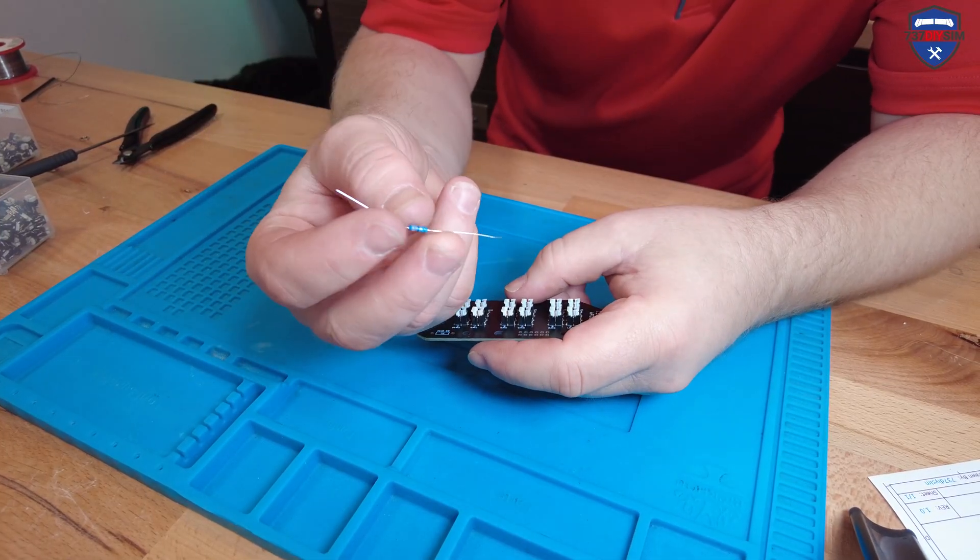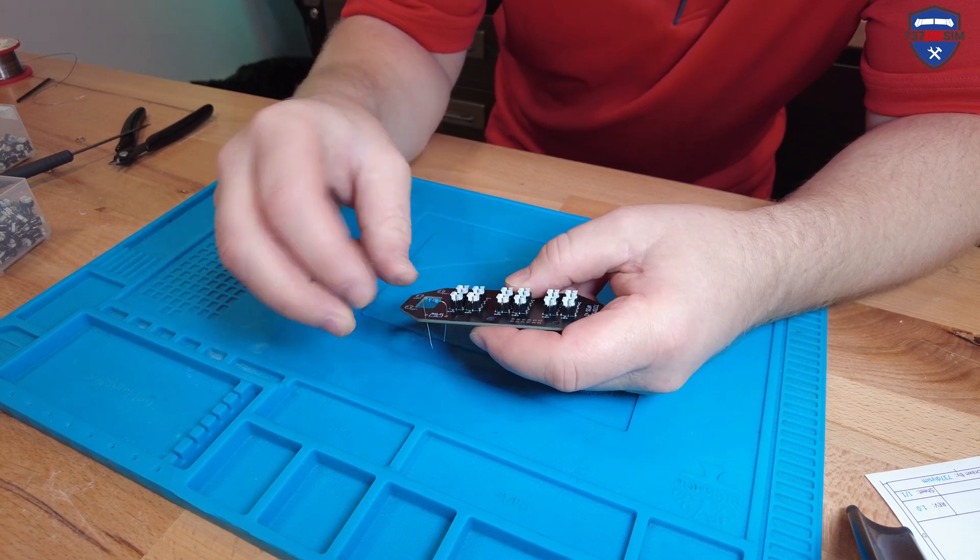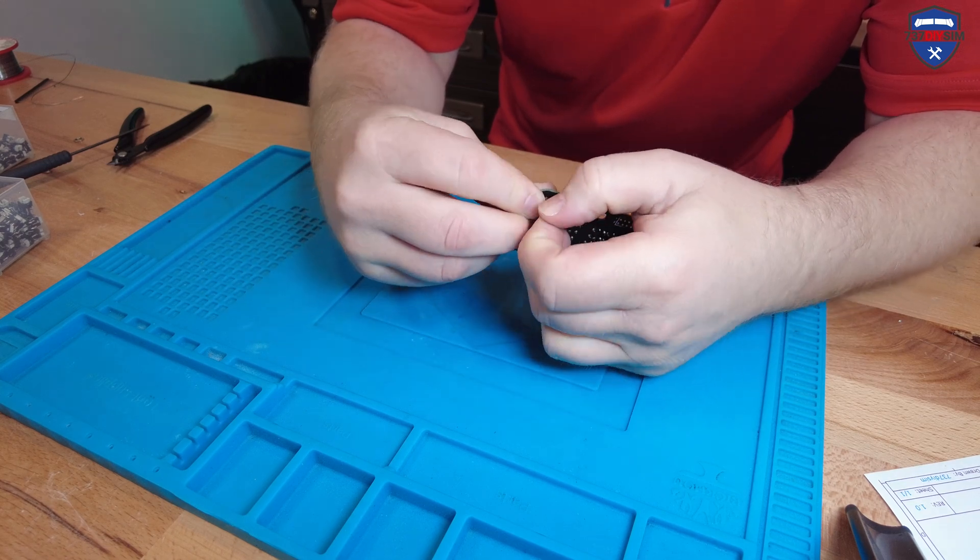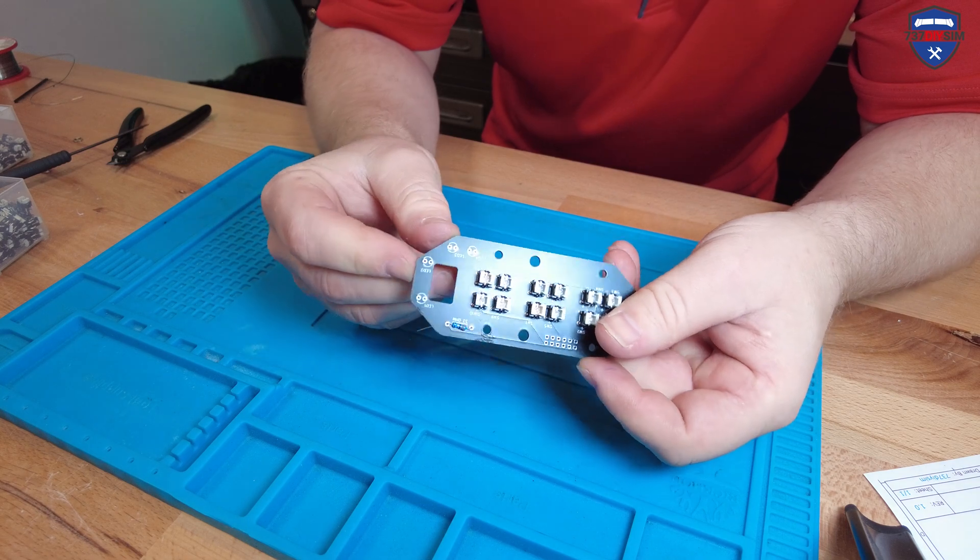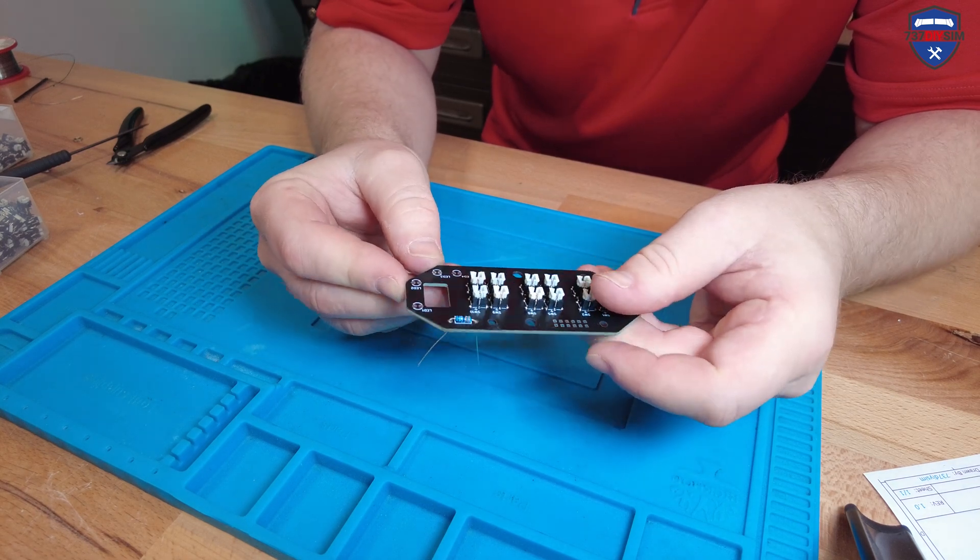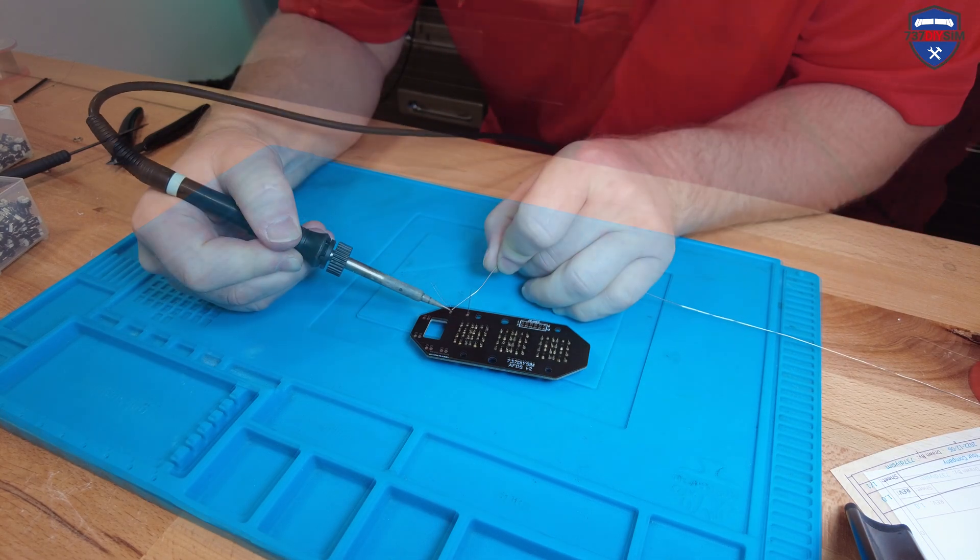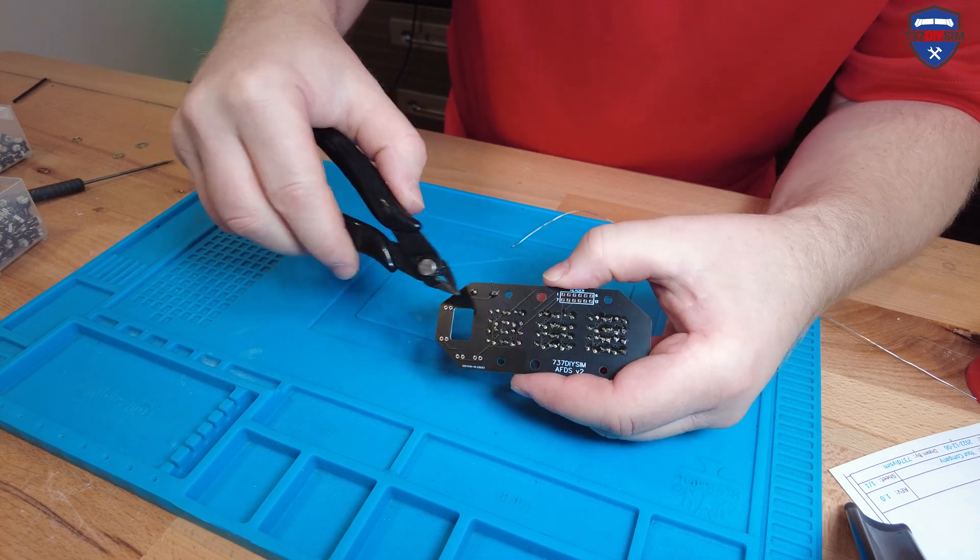Next up, we've got our 33 ohm resistor. We're just going to feed that in, bend the legs over and put it into position. And that's it situated there. We can solder that into position now. Trim those legs.